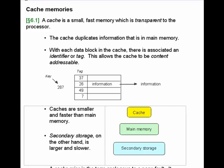The cache duplicates information that's in main memory, and each data block in the cache has an associated identifier or tag. The blocks can be of varying size — probably at least several words large, and probably not more than about 256 bytes. In fact, 128 or 256 bytes are the most common sizes. Each cache block has a tag associated with it, and the tag is what's used to look up information in the cache.